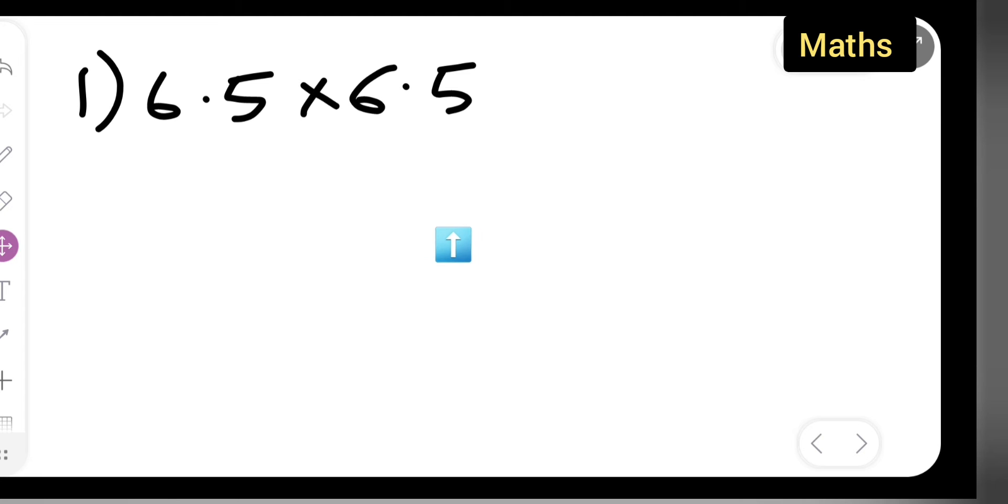First, write down the question: 6.5 multiplied by 6.5. First thing is you're going to write 6.5 multiplied by 6.5, or else what you can do is remove the decimal point: 65 upon 10